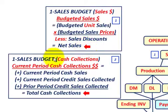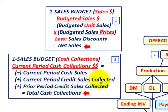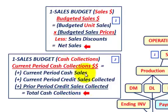For our sales budget cash collections, the current period cash collections equal the current period cash sales, plus the current period credit sales that are collected, plus the prior period credit sales that are collected — giving us our total cash collections for the period. So these are the two things we're going to look at: determining our net sales as a budgeted amount, and our total cash collections as a budgeted amount.